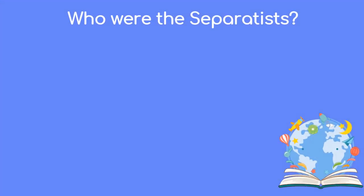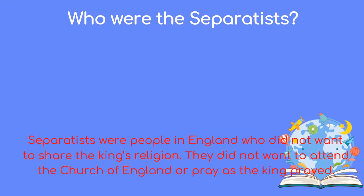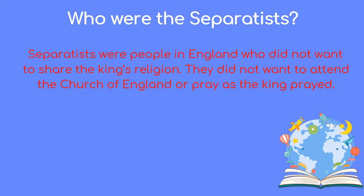Who were the separatists? Separatists were people in England who did not want to share the king's religion. They did not want to attend the Church of England or pray as the king prayed.